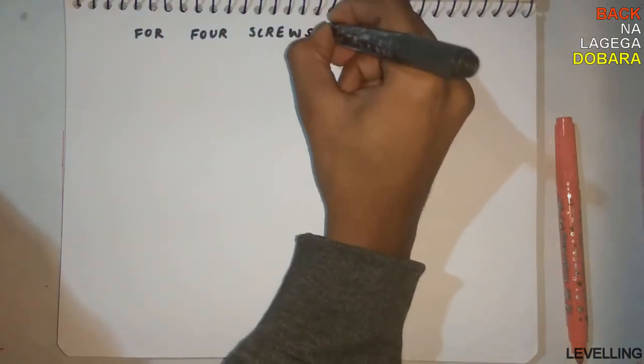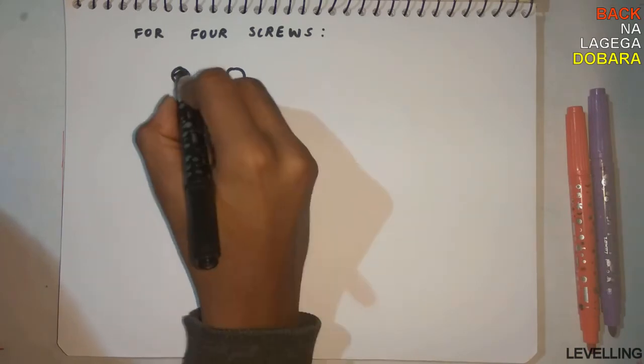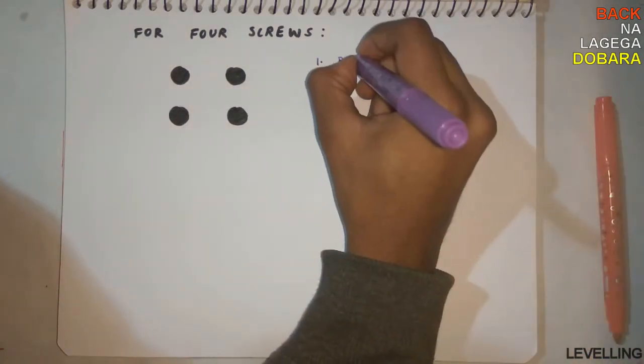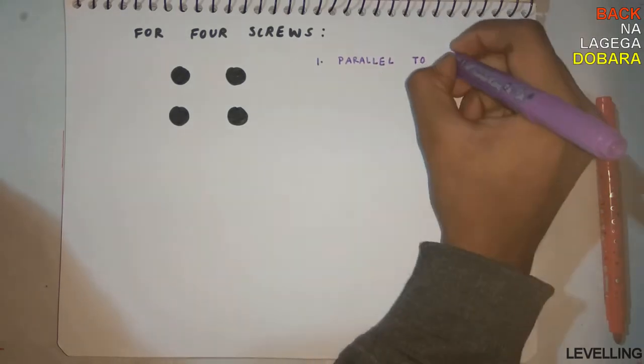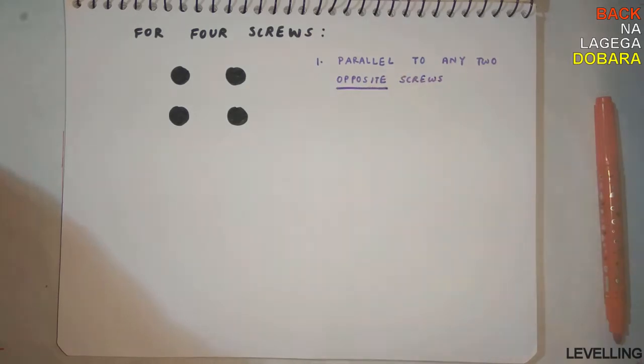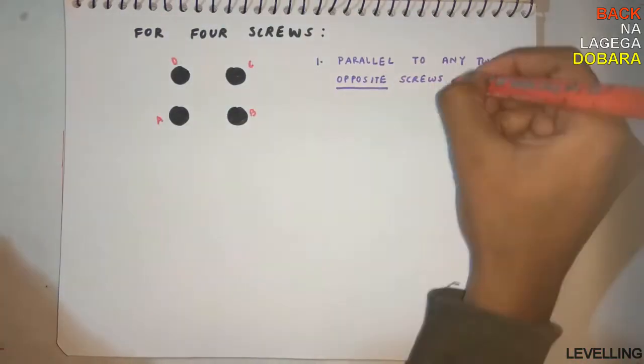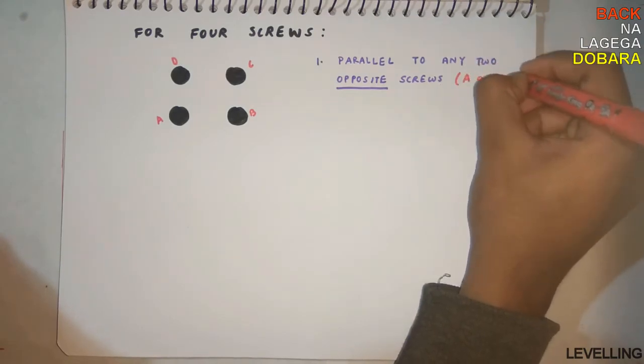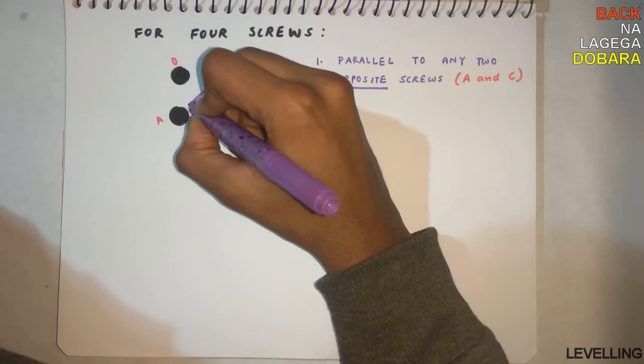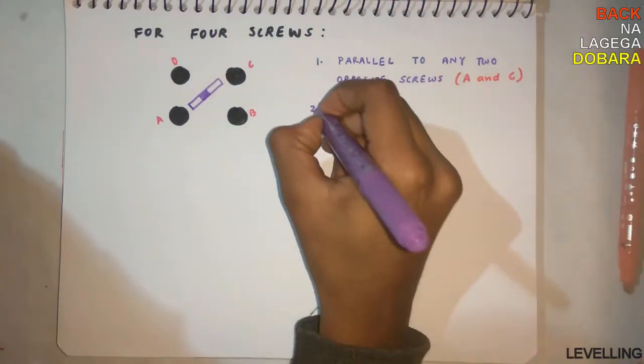Let's see for four screws. Four screws in leveling is more easy. Let's see how. Just make the level parallel to any two opposite screws - A, B, C, D. Opposite screws - let it be A and C, parallel to A and C. Then rotate and adjust.